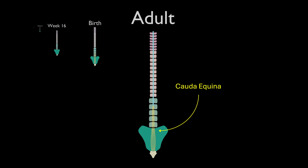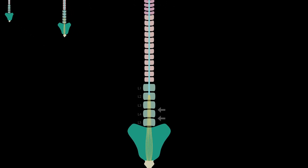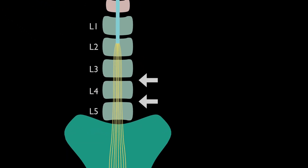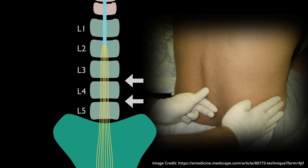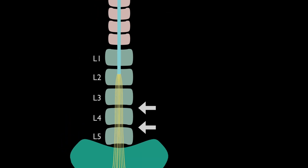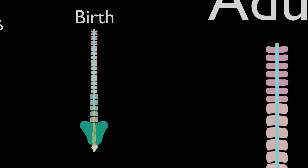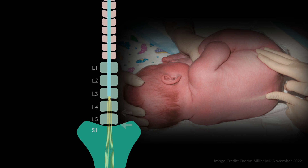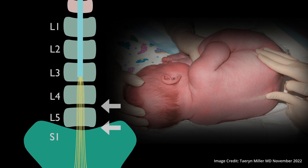So why does this matter clinically? It explains where we can safely access the spinal canal. In adults, lumbar punctures and epidurals are performed below L3, usually around L4 or L5, because at that level you're threading the needle into a fluid space without risking damage to the spinal cord itself — you're just pushing aside these floating nerve roots. In infants, though, the cord ends a little lower, so care has to be taken to choose the right level.